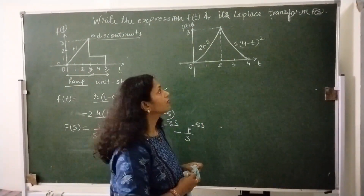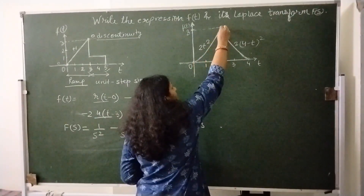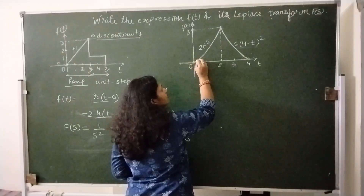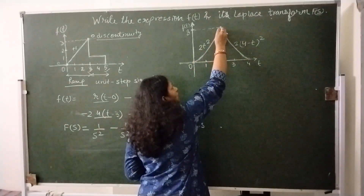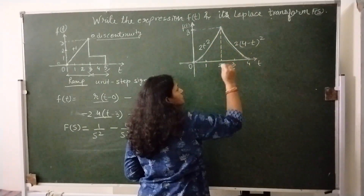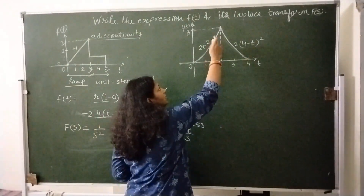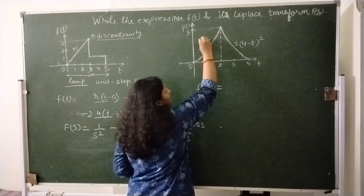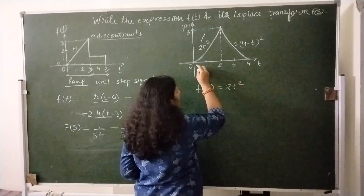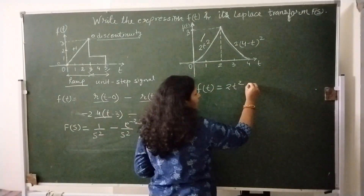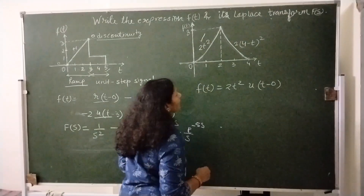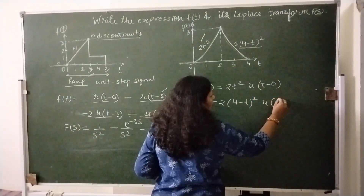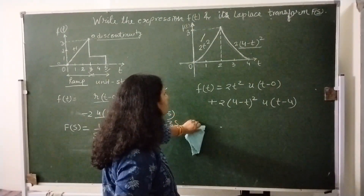Now we come to our next problem. This is a parabolic type of curve — two curves are given and their equations are given. For such waveforms we have to write the expression. The expressions are already given, so first we write the first expression, then the second, then calculate the slope change and write a ramp signal at that point. Write down the first expression 2t² with unit step at t minus 0, and the second expression plus 2·(4 minus t)²·u(t minus 4), because one point is at t equals 4.